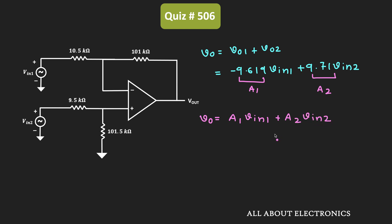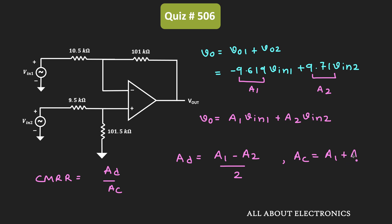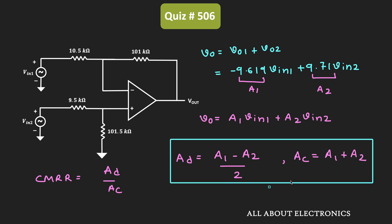To find the common mode rejection ratio, we need the ratio of the differential gain to the common mode gain, since CMRR equals AD divided by AC. The differential gain AD is equal to A1 minus A2 divided by 2, and the common mode gain AC is equal to A1 plus A2. Substituting the values of A1 and A2, the differential gain AD comes out as minus 9.6645, and the common mode gain AC comes out as 0.091.